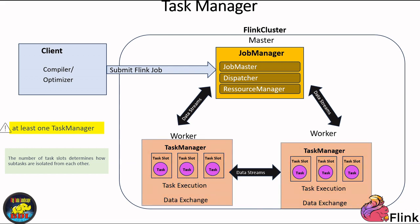The number of task slots determines how subtasks are isolated from each other. For distributed execution, Flink chains operator subtasks together into tasks, with each task executed by one thread.